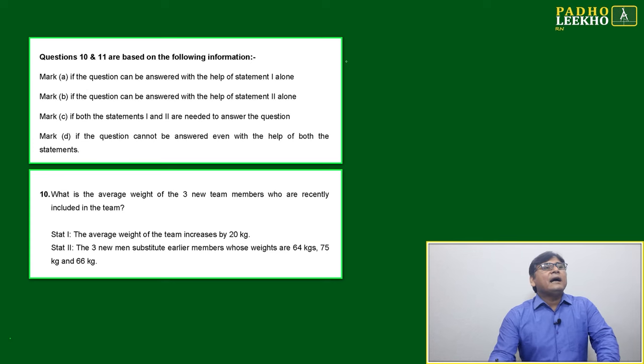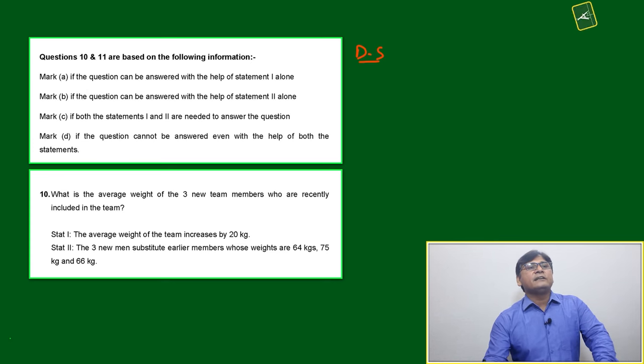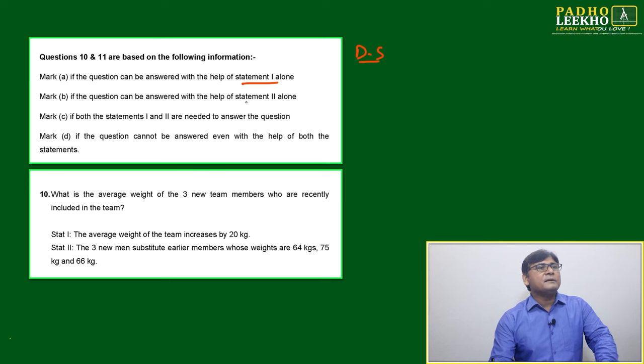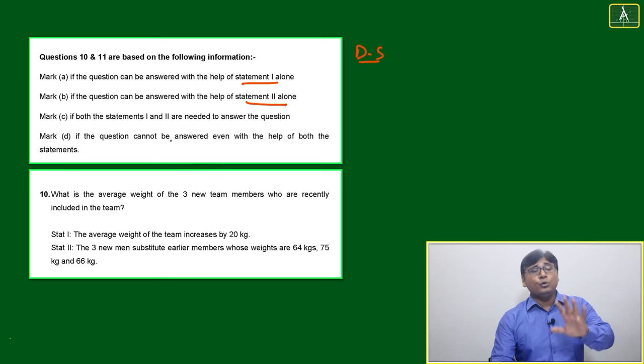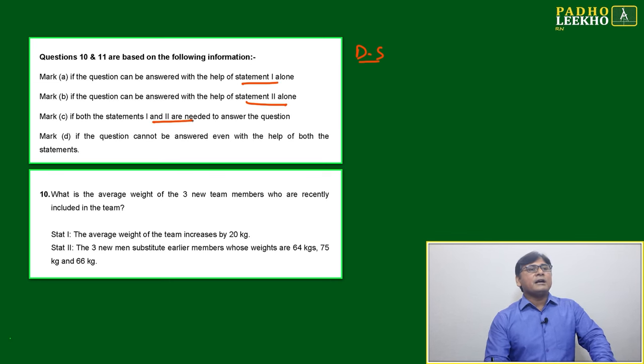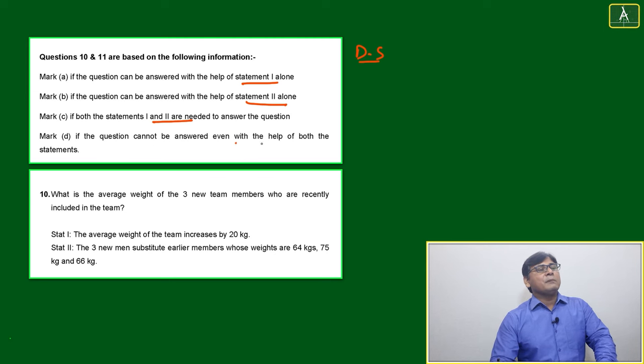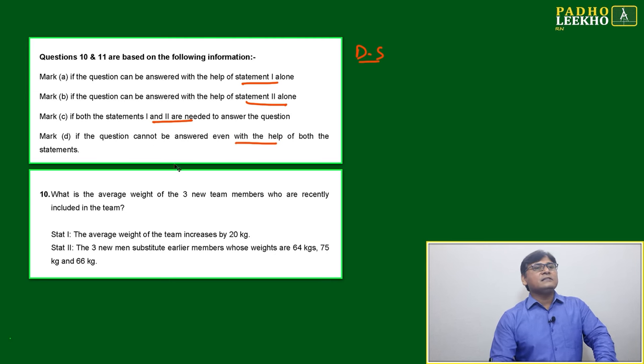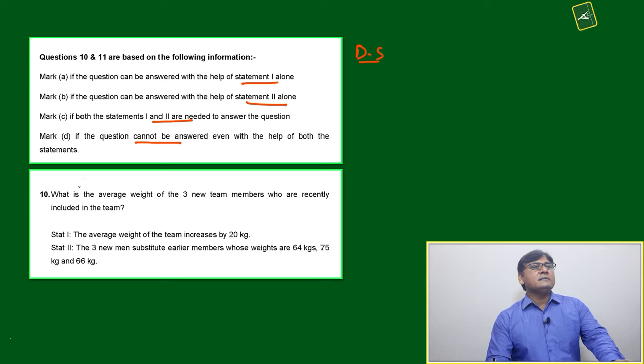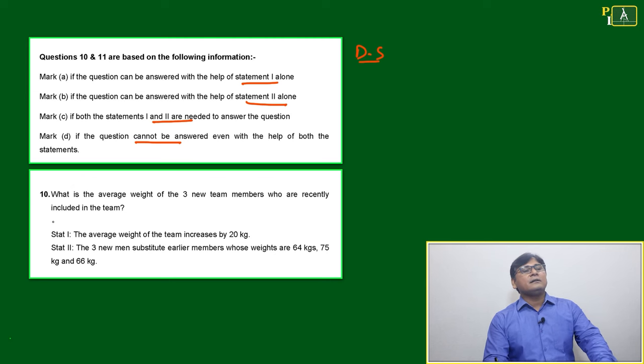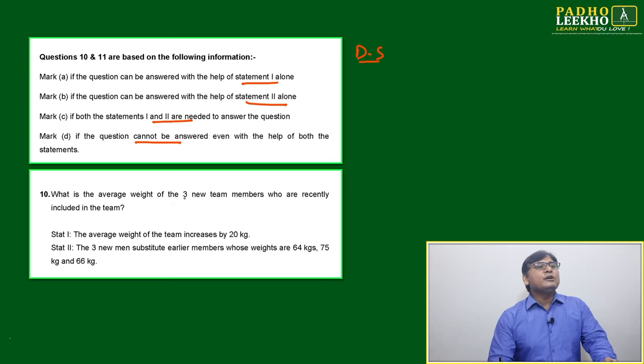Now we'll come to question number 10 and 11. It is based on data sufficiency. The options are given: mark A if the question can be answered with the help of statement 1 alone, mark B if the question can be answered with the help of statement 2 alone, mark C if you are taking help of both, and mark D if the question cannot be answered.